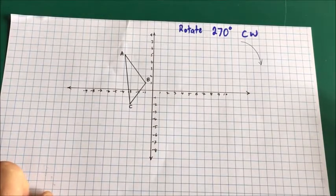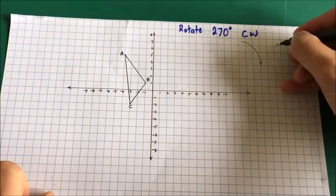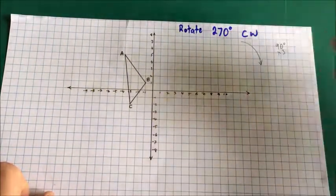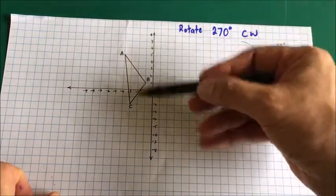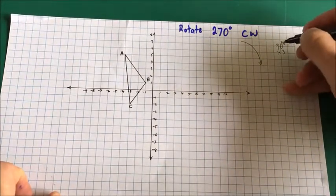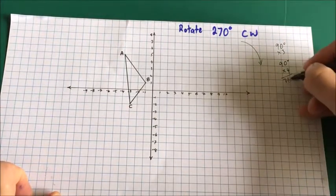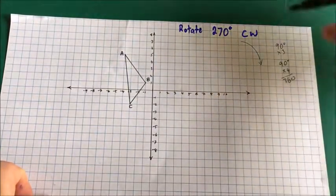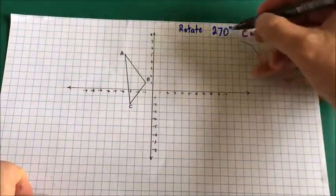There are two ways to do this. One, you could go clockwise 270 degrees, which is 90 degrees three times: 90, 180, 270 clockwise. The other way, which is just as good and a little bit quicker, is to go 90 degrees anti-clockwise. Because if you go one more 90 degrees, that's 360, so you're one 90-degree turn away from going all the way around to where you started. So you either go 270 clockwise or 90 anti-clockwise.